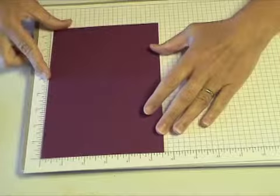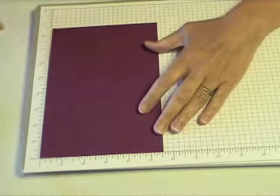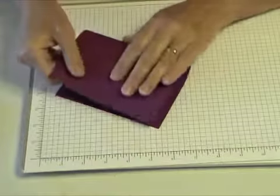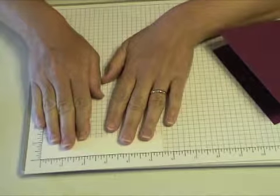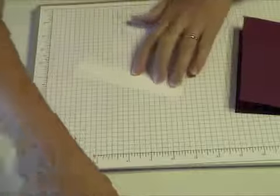For the background, I'm going to use Rich Razzleberry 5 1/2 by 8 1/2. Along the very bottom, I'm going to use some Whisper White cardstock 1 inch by 5 1/2 inches and just tape that across the bottom.